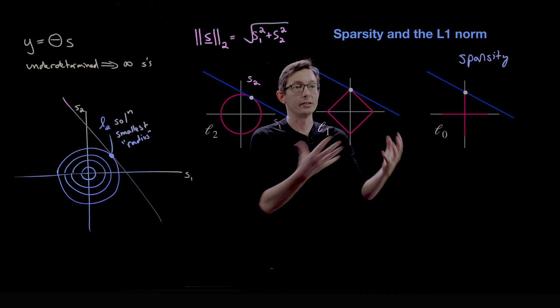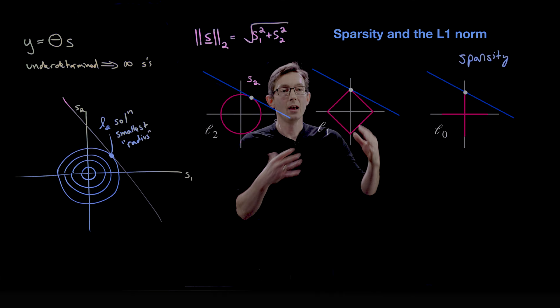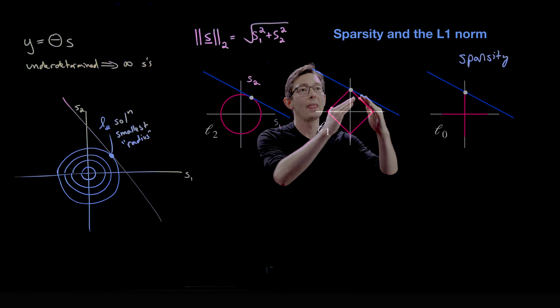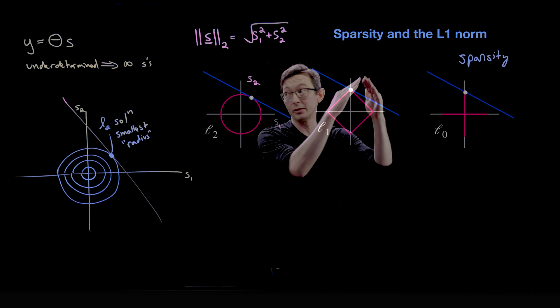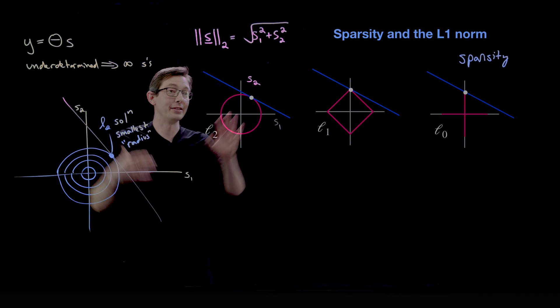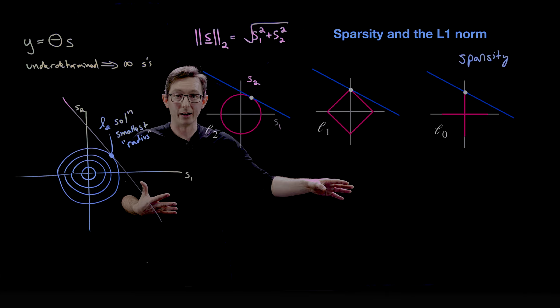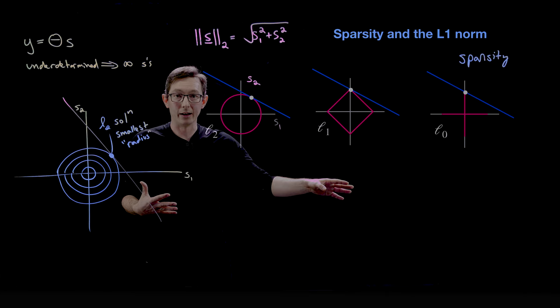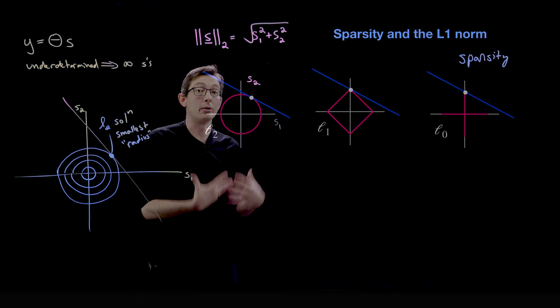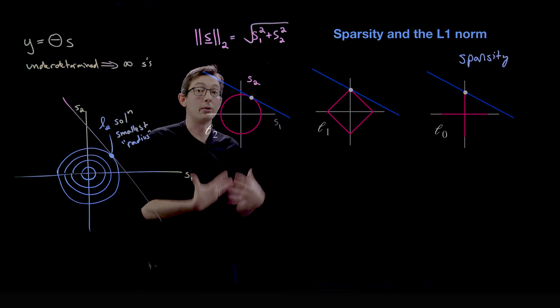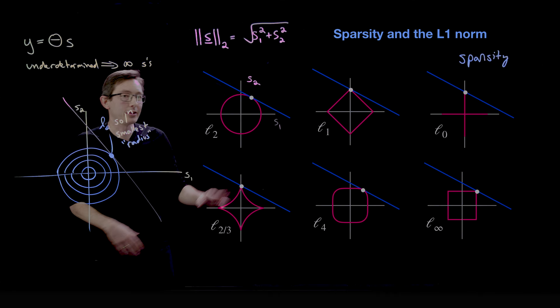This actually generalizes even better in higher dimensions — the analogous technology works even better as dimensions grow. These diamond norms are really pointy and they tend to intersect underdetermined solution families at sparse solutions. The one-norm promotes sparse solutions to underdetermined problems, which is really useful for robust solutions and finding solutions without too many free parameters in machine learning, statistics, and linear algebra.